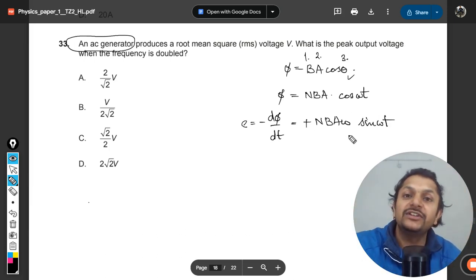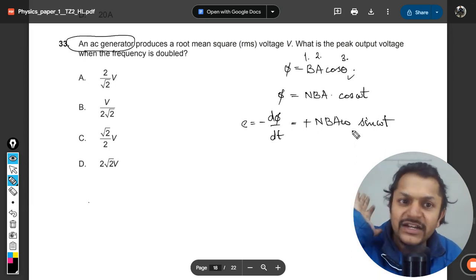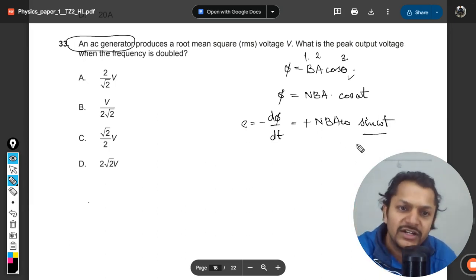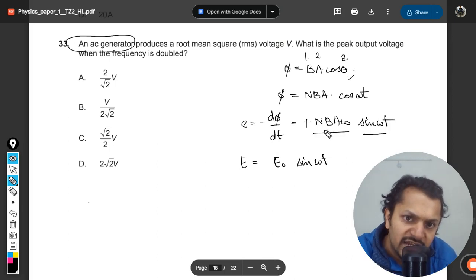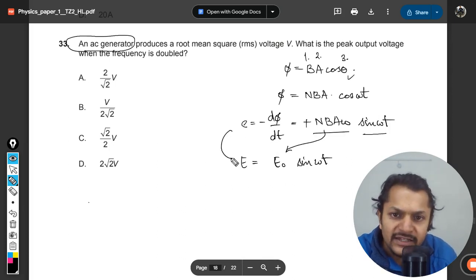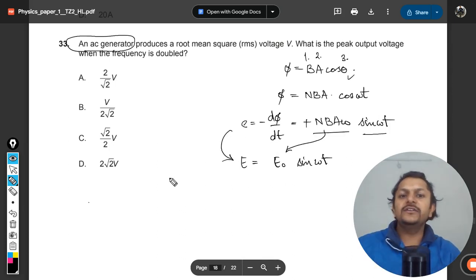This is the EMF that is generated in the case of AC generators because it is alternating current. Sine ωt is there, so we can simplify it and we can write it as E is equal to E₀ sine ωt. This is E₀ and this value is E, so E equals E₀ sine ωt.